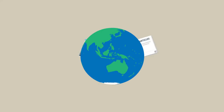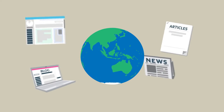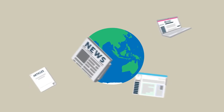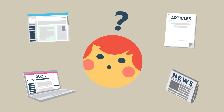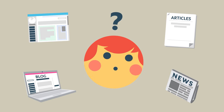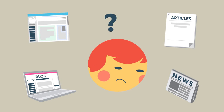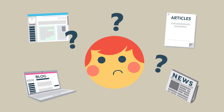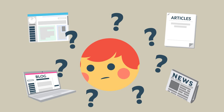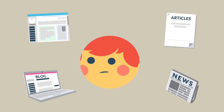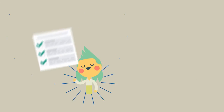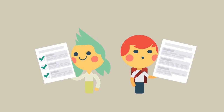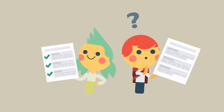Living in a digital world means that we can access information on almost any topic, at any time and from anywhere. When trying to find resources for your assignments at uni, having access to all this information can be overwhelming. You can't believe everything you read, and you need to think critically about the information before you choose to use it. So how can you be confident that you are selecting the best resources to answer your task?